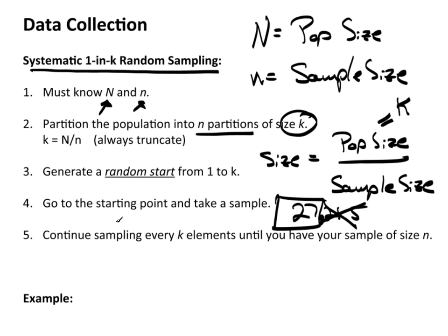Now what you're going to do is go to the starting point and take a sample. The starting point is this random start. You need a random number, a random integer between 1 and k, which this really quick example is 27. Let's just say it was 13. So that means you go to 13 and take your sample. Maybe this is a list, or maybe this is a location on a plot of land or something. So you go to 13, take your sample.